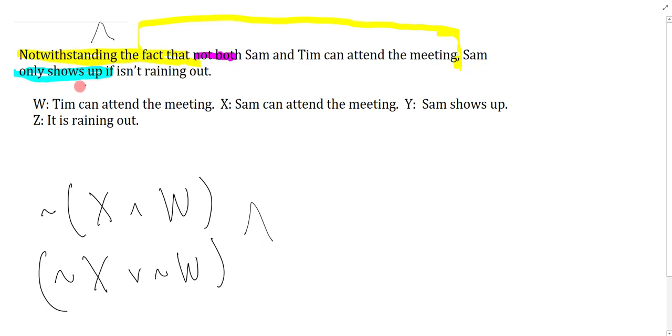Next we have to symbolize Sam only shows up if it isn't raining. Isn't raining, that's just a negation Z, and Sam shows up is Y. So the question here is: is this Y arrow negation Z, or is this negation Z arrow Y?